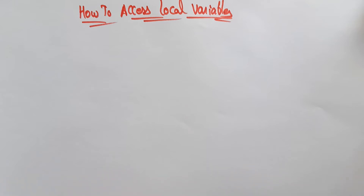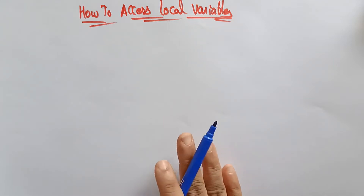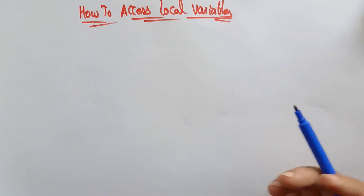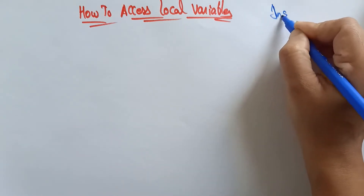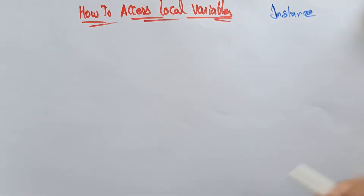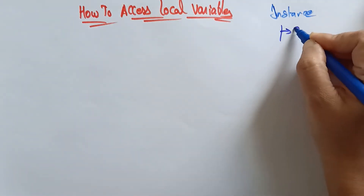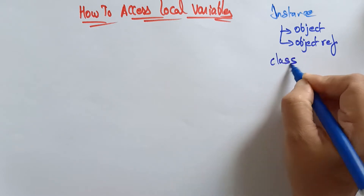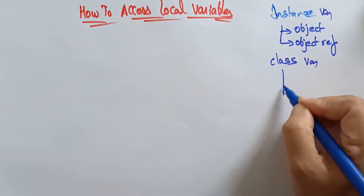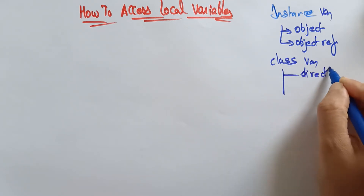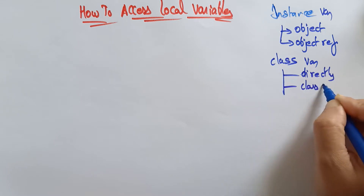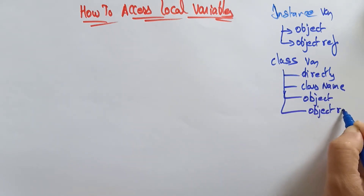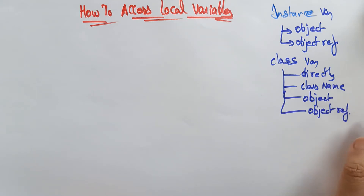Welcome back students. In the previous videos I explained how to access class variables and instance variables. To access instance variables there are two methods: using an object or using an object reference. To access class variables there are four methods: directly, by using class name, by using object, or by using object reference.